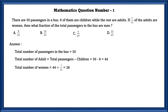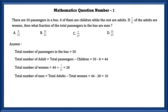Number of women in the bus is equal to 44 × 7/11, which is equal to 28, since 7/11 of the adults are women. Total number of men is equal to total adults minus total women, which is 44 minus 28, which is equal to 16. Fraction of men to the total number of passengers is equal to 16/50 or 8/25.